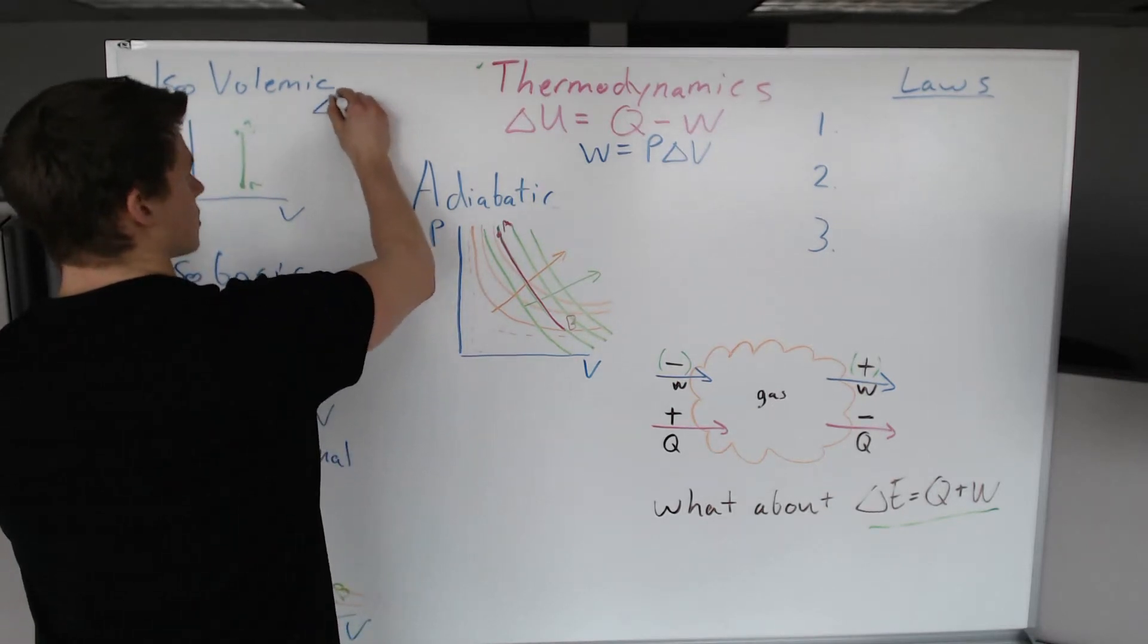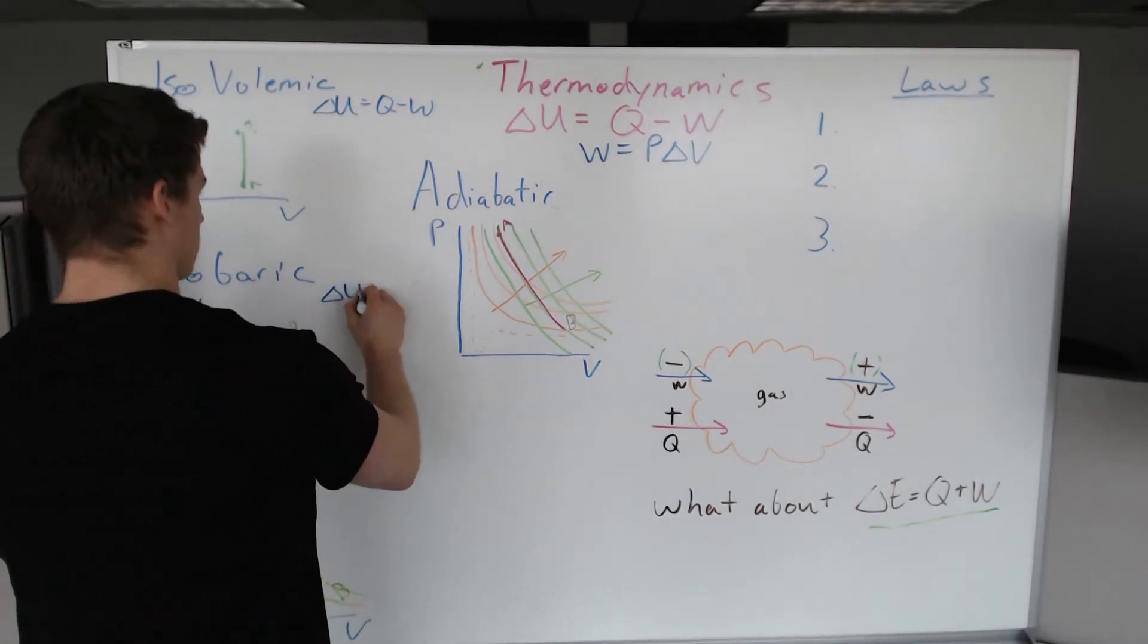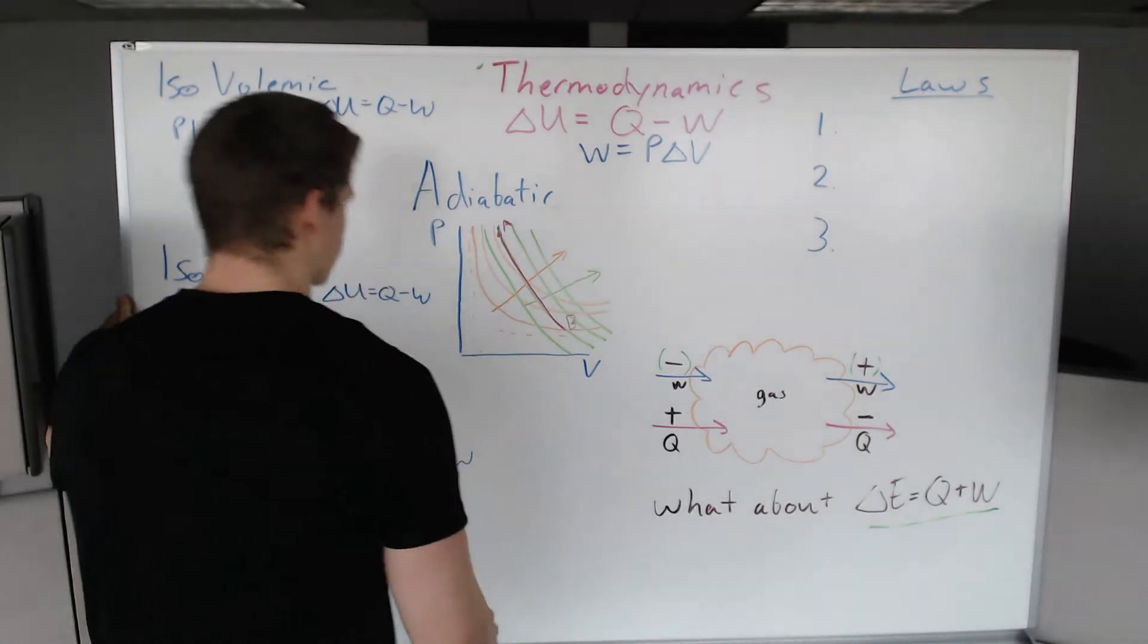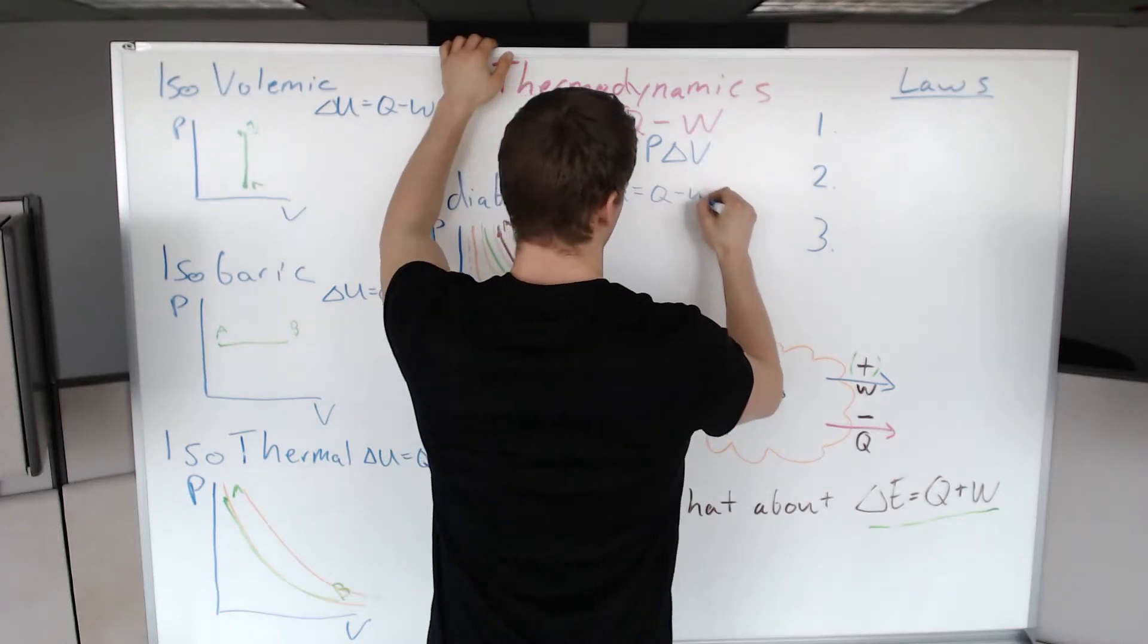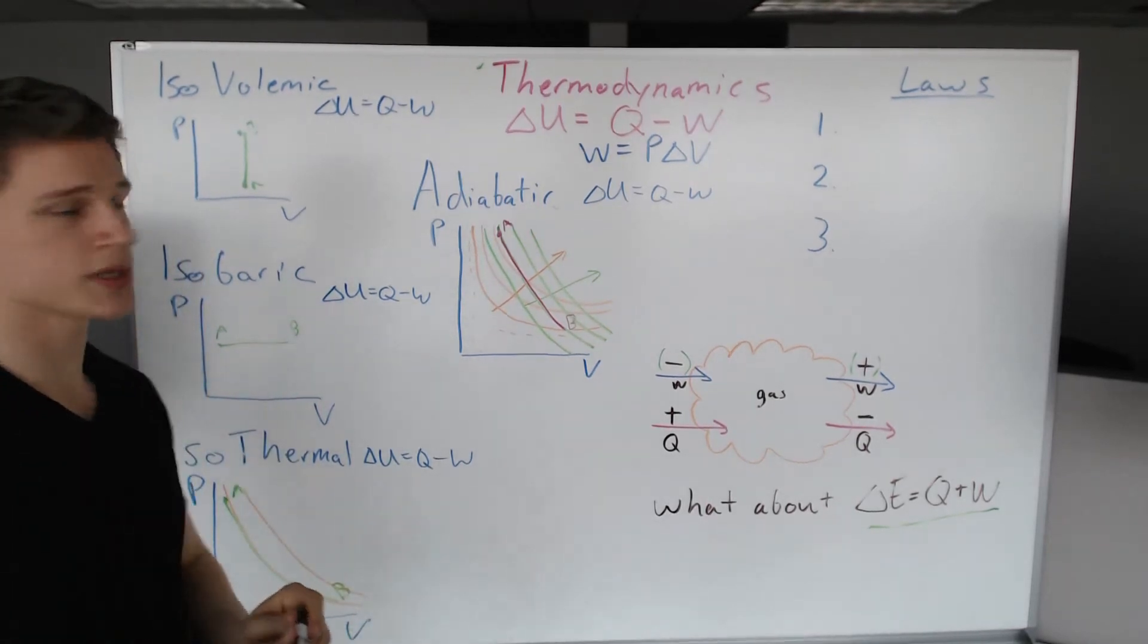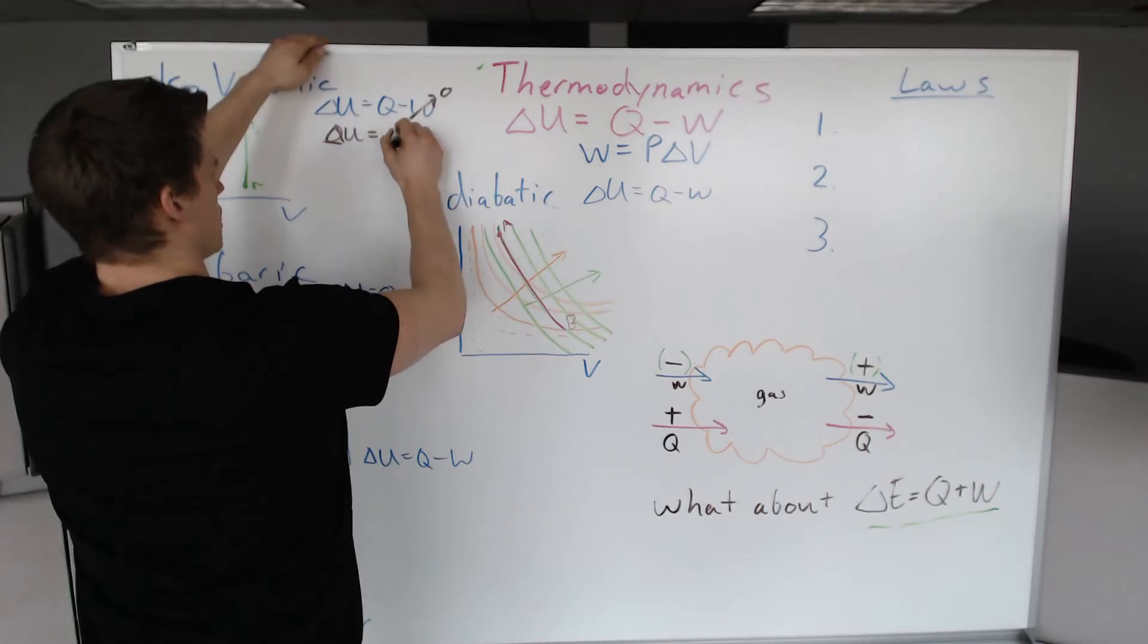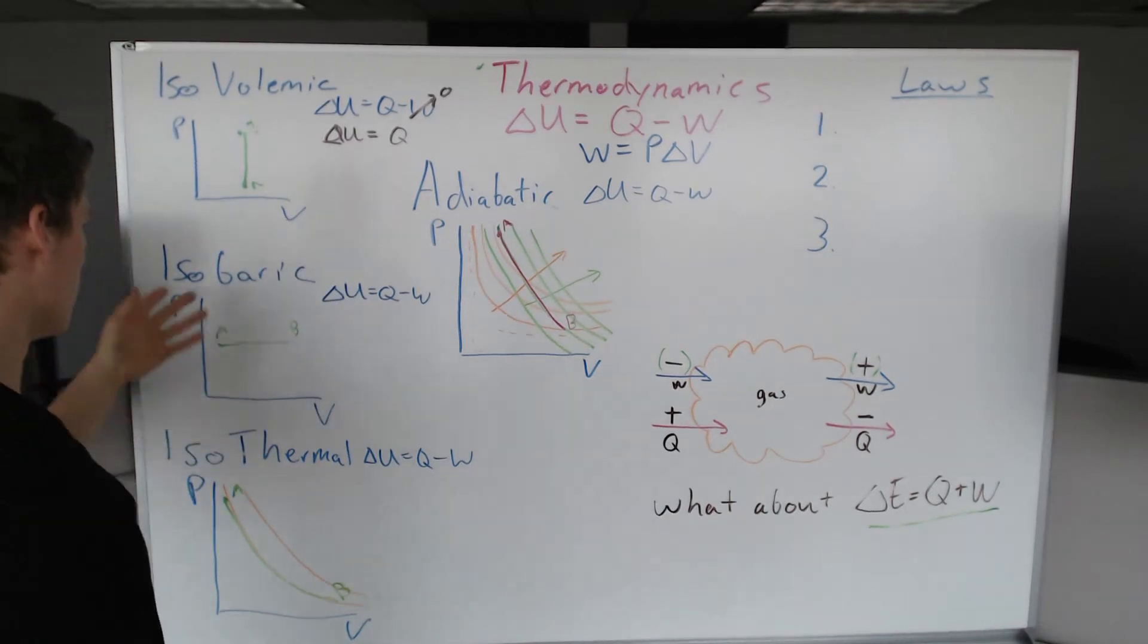When we write our equation, I'm going to write it for all of them: ΔU = Q - W for each process. In brown I will write what actually happens. As you would expect, there's no work, so work is zero. That means the change in internal energy equals the change in heat. That is isovolumetric.